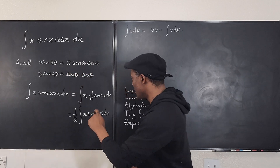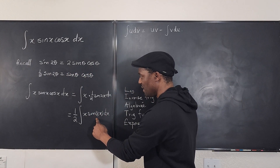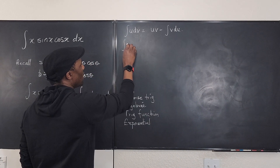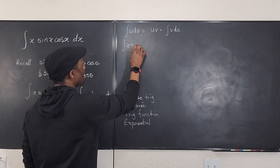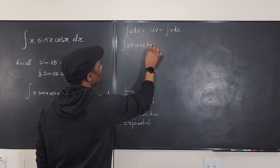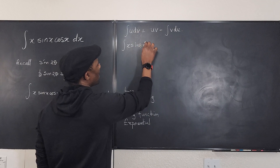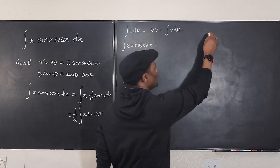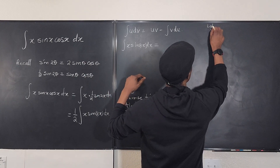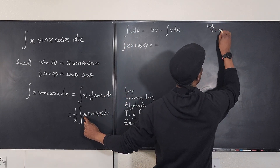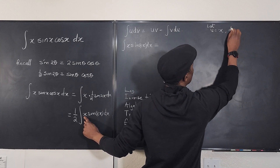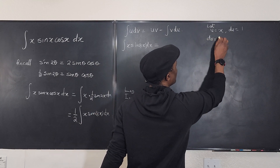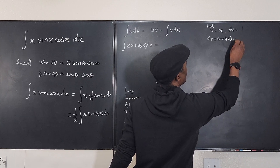So x is more important to differentiate than sin(2x) based on LIATE. Therefore, let u = x, which means du = dx (since the derivative of x is 1). And dv = sin(2x) dx.